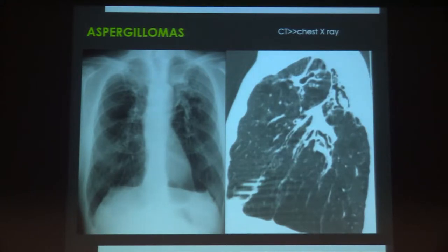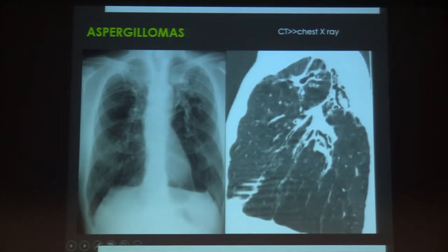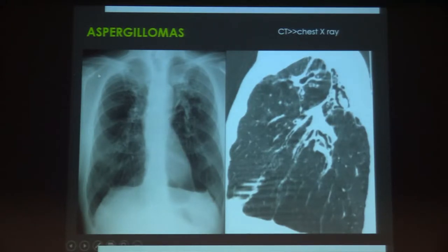Aspergillomas are a very common cause of severe bleeding, and CT is superior to chest X-ray for their detection. The air crescent sign can be difficult to depict on chest X-ray. Therefore, in patients with relevant chest X-ray changes, we need to perform contrast-enhanced CT to detect aspergilloma.